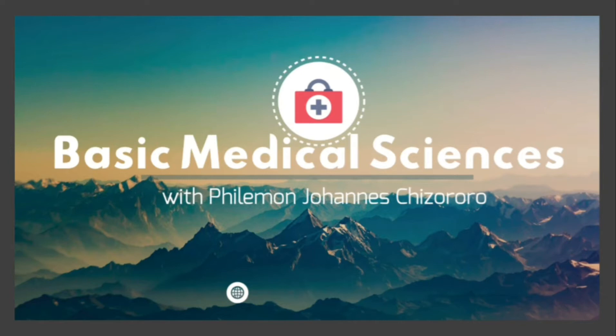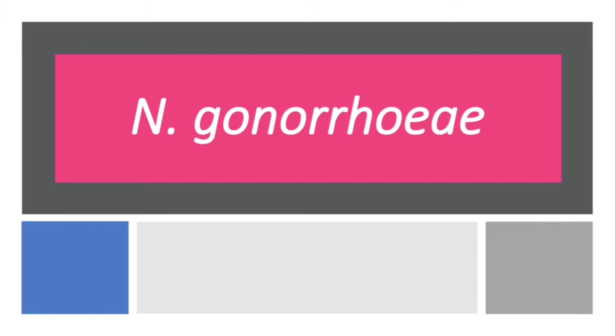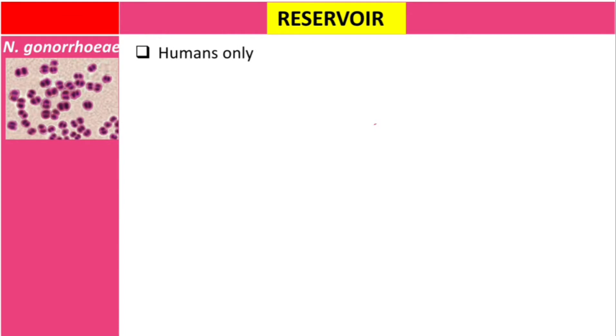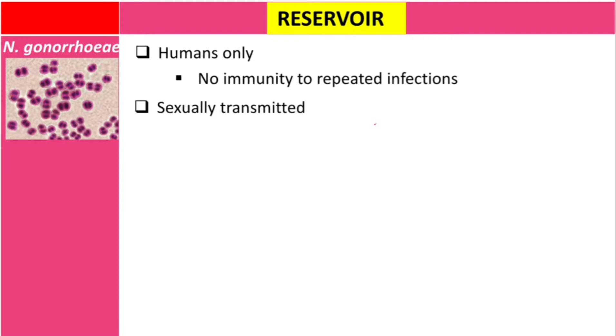Hello and welcome to Basic Medical Sciences. If this is your first time, please subscribe so you won't miss any of our latest videos. In this video we are going to talk about Neisseria gonorrhoeae, the causative agent for gonorrhea. This disease only infects humans. There is no immunity to repeated infections, which I will explain later. Transmission is sexual, and also through an infected birth canal.